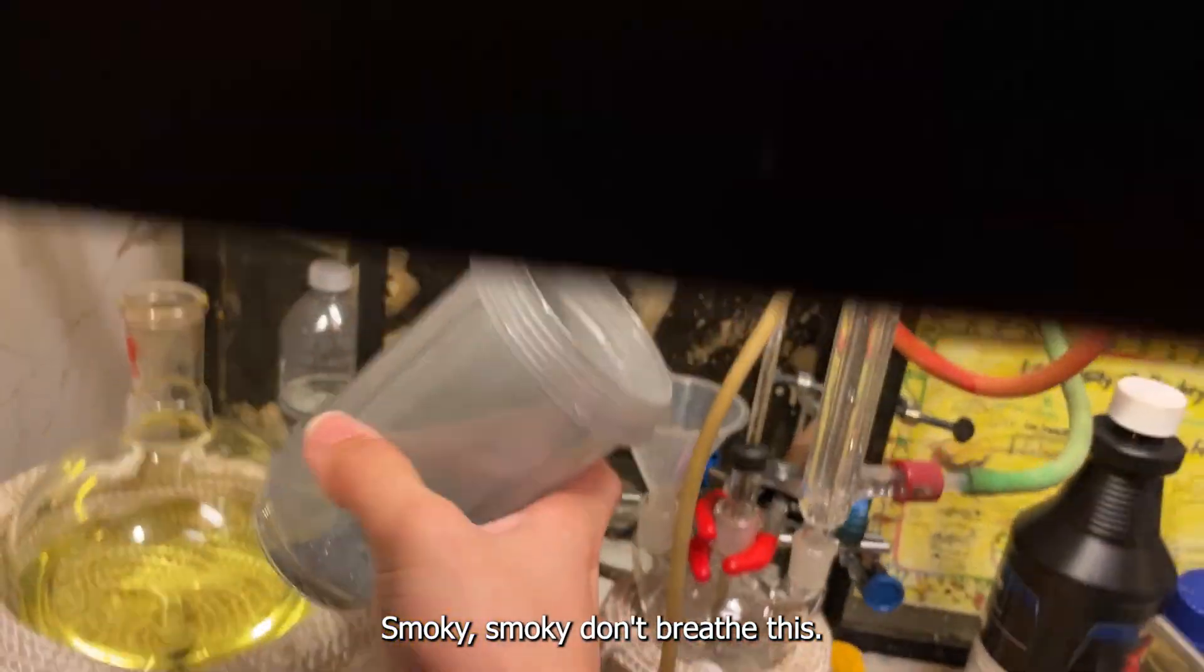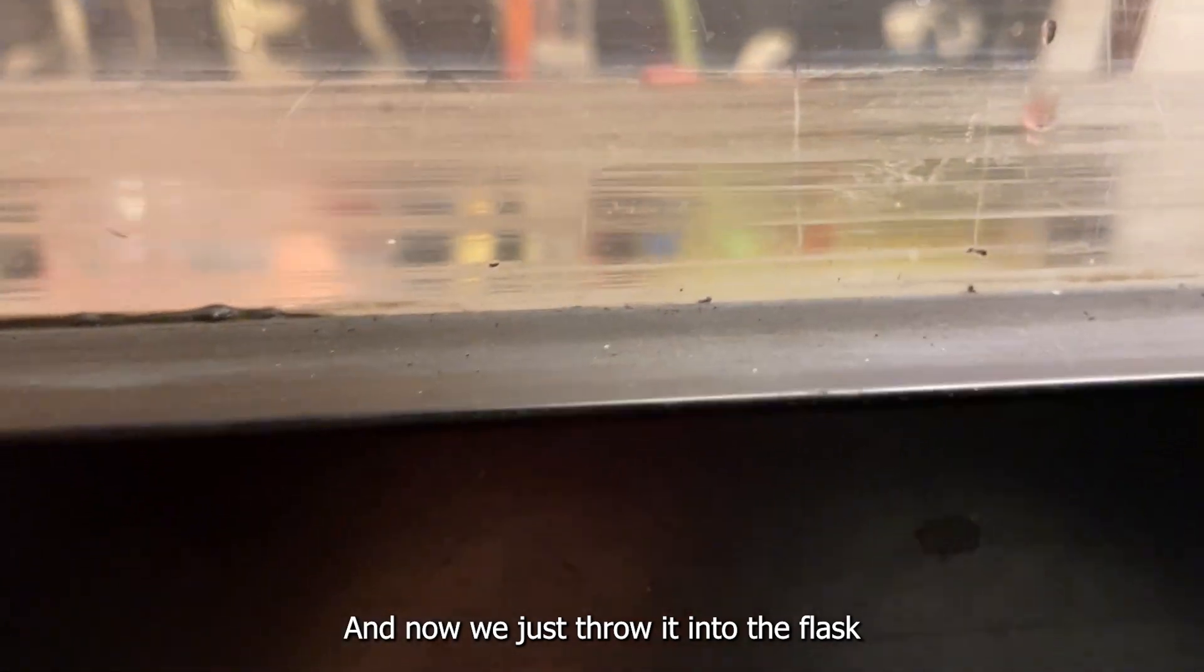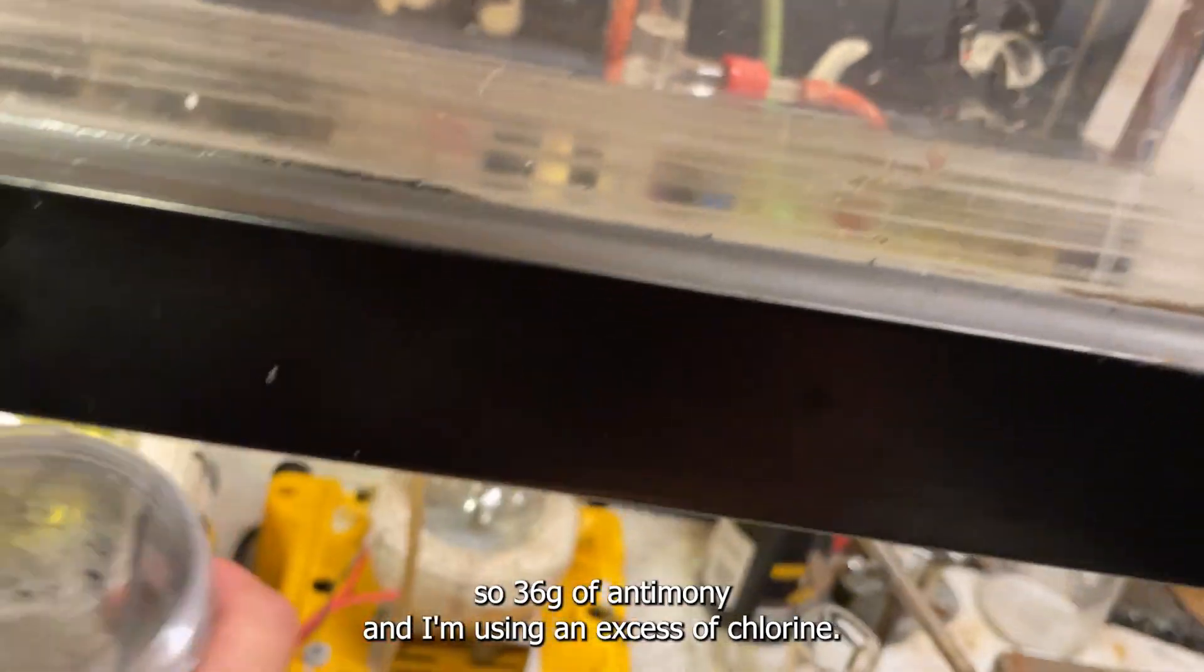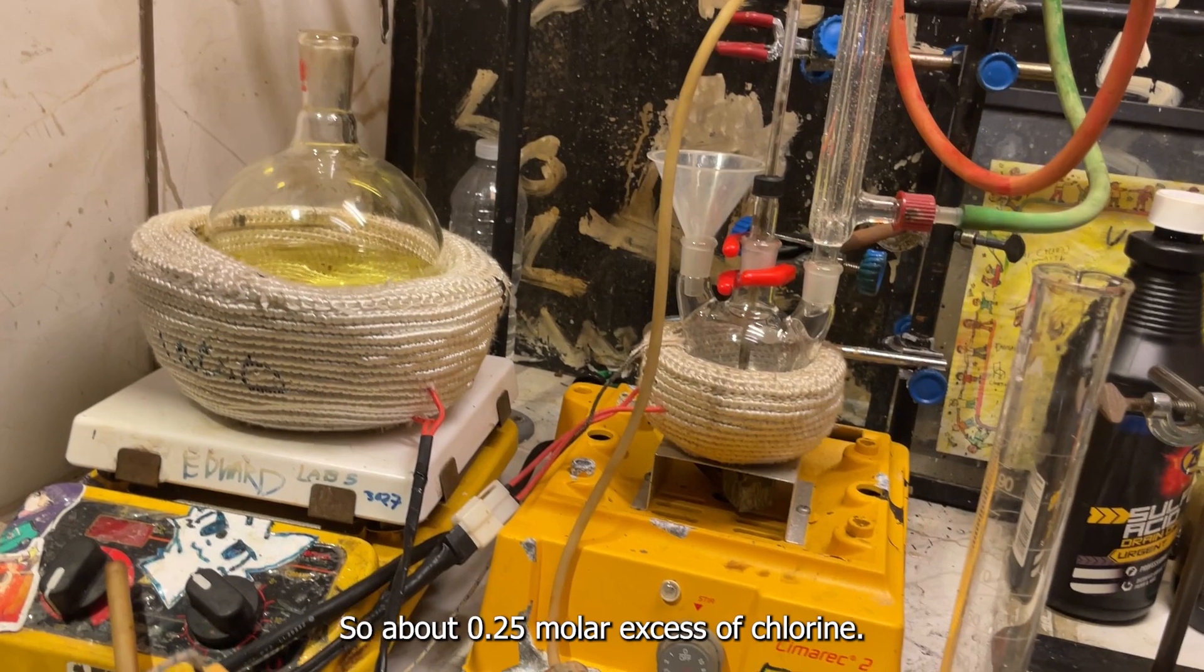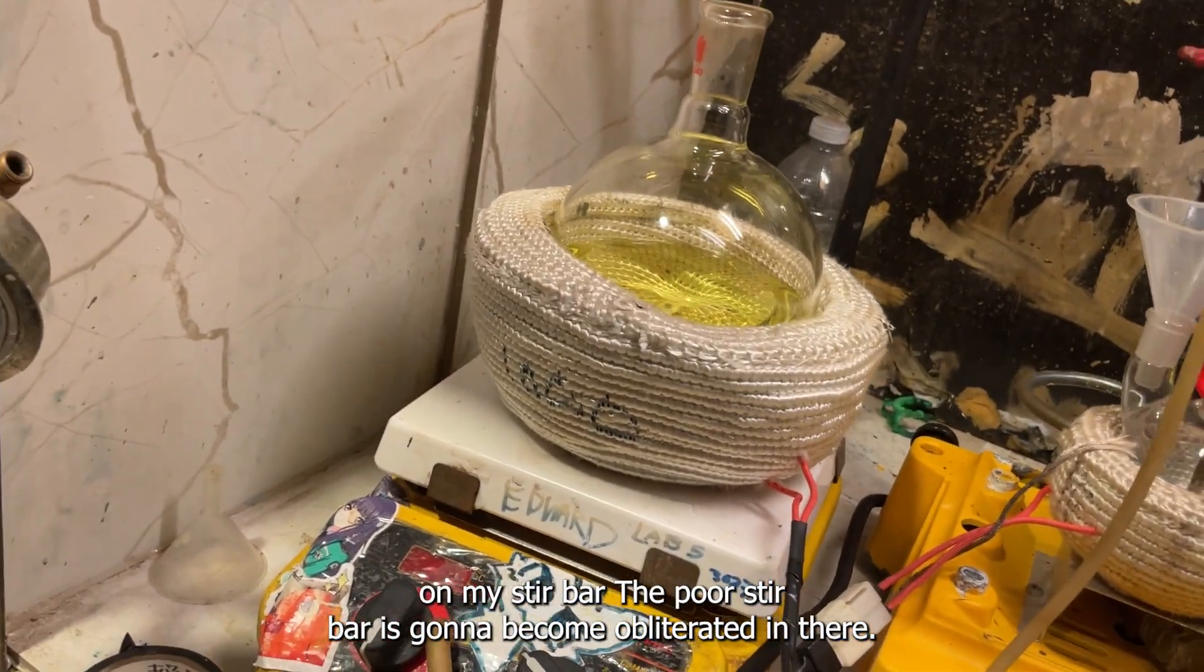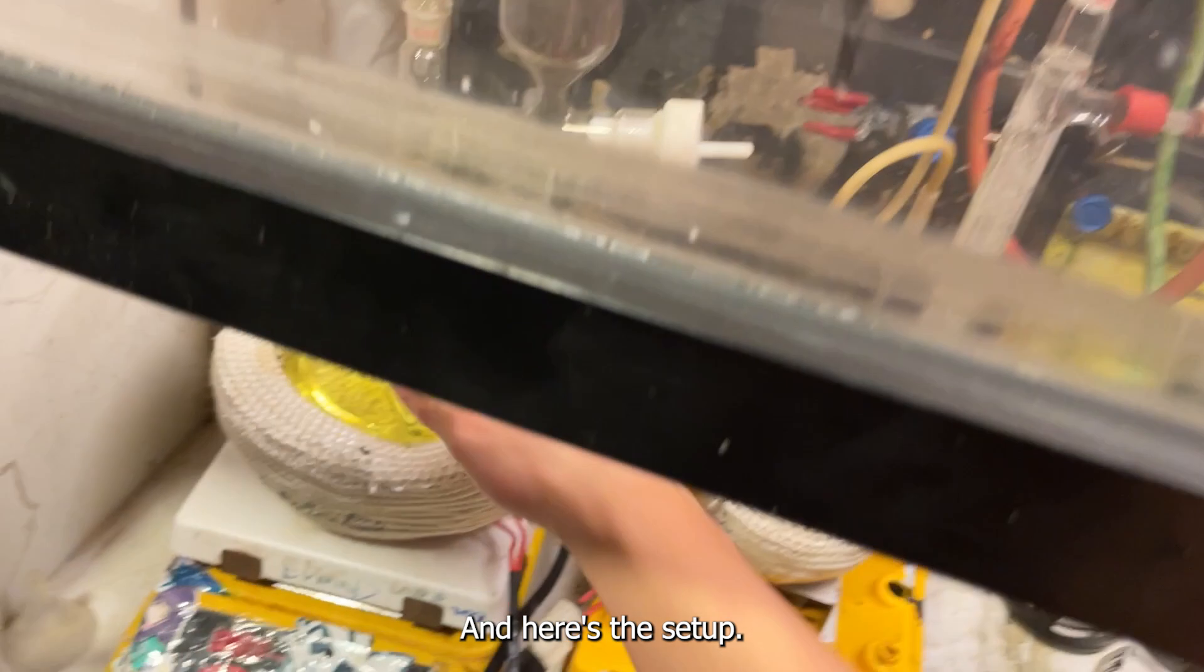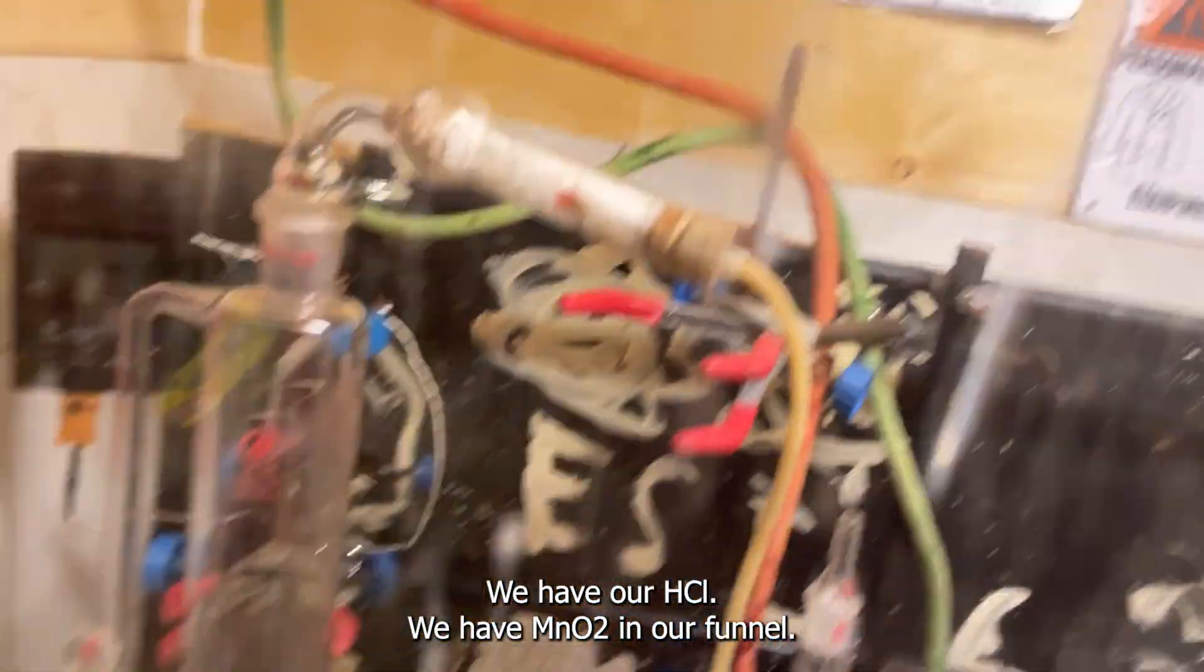Smokey smokey, don't breathe this. And now we just throw it into the flask. So 36 grams of antimony, and I'm using an excess of chlorine. So about 0.25 molar excess of chlorine. And the hydrochloric acid's gone yellow because there's iron filings on my stir bar. The poor stir bar is going to become obliterated in there. And here's the setup. We have our HCl. We have the MnO2 in our funnel. We have the drying.